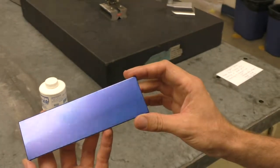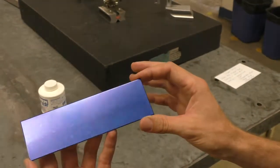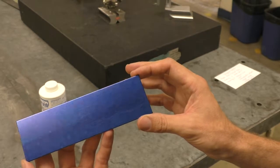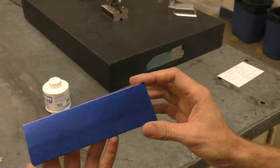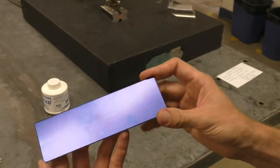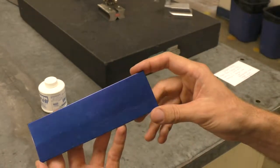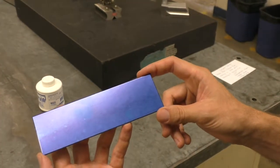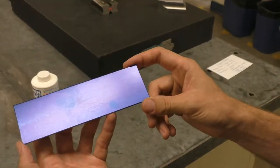You don't want to put it on too thick because then as you scribe and strike your lines, it will chip on you. So this one has a fairly light coat. And the purpose of the layout dye is so that when you do scratch the metal, we'll have some good contrast, and we'll be able to see the features that we put on this metal.